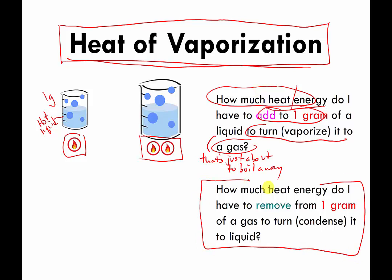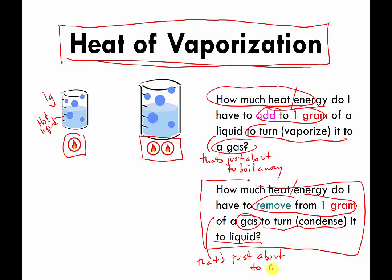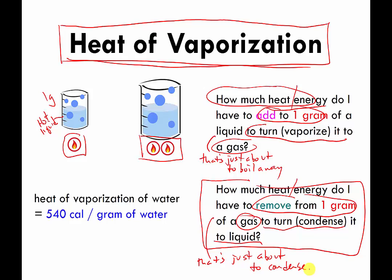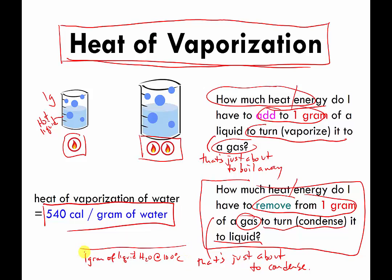You can think of it in reverse: how much heat do I have to remove from one gram of a gas in order to condense it back into a liquid? The gas has to be right at the condensation point for these calculations. As an example, the heat of vaporization of water is about 540 calories per gram. That means if I have one gram of liquid water at 100 degrees Celsius — the boiling point of water — it's going to cost 540 calories to boil it all away. This is called the heat of vaporization of water.